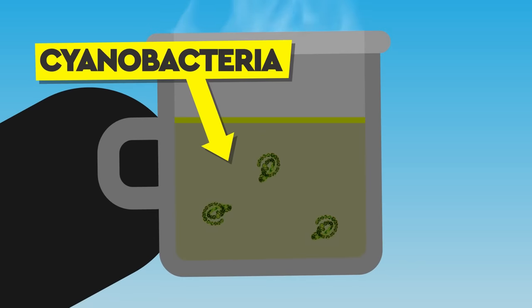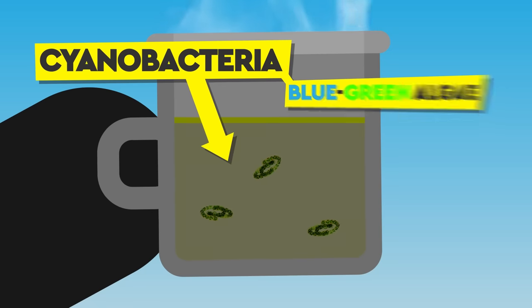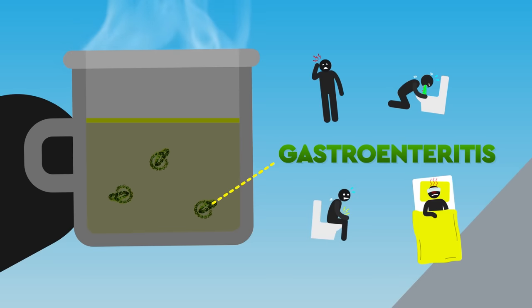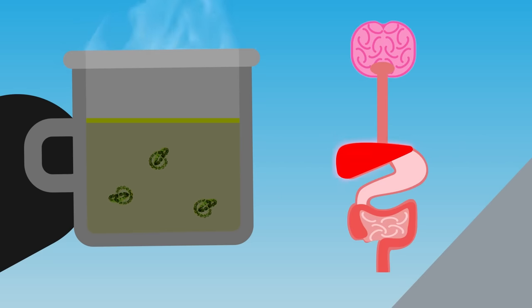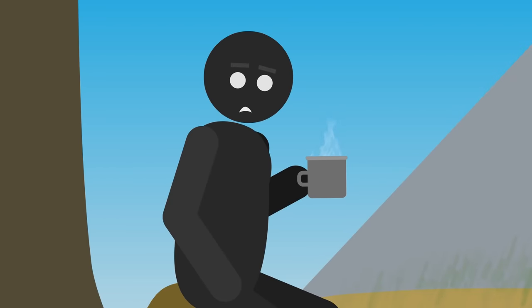Algal toxins from cyanobacteria, commonly known as blue-green algae, are also not neutralized by boiling. Ingesting these toxins may lead to gastroenteritis, causing vomiting, diarrhea, fever and headaches, and may even affect liver and nervous system functioning. None of these things are going to help you survive in the wilderness.